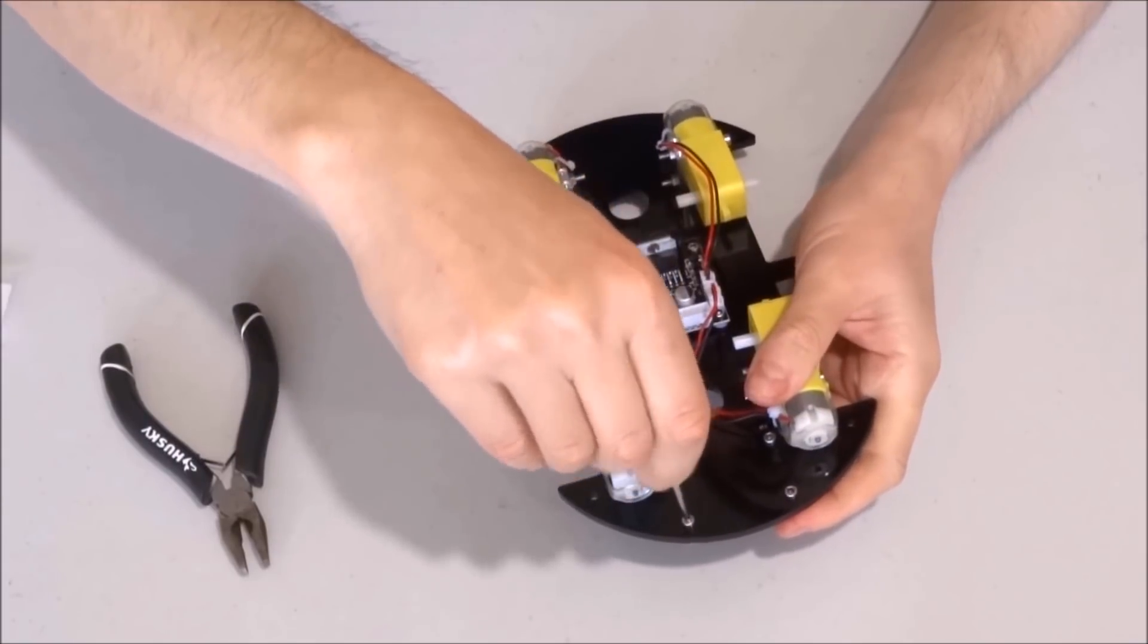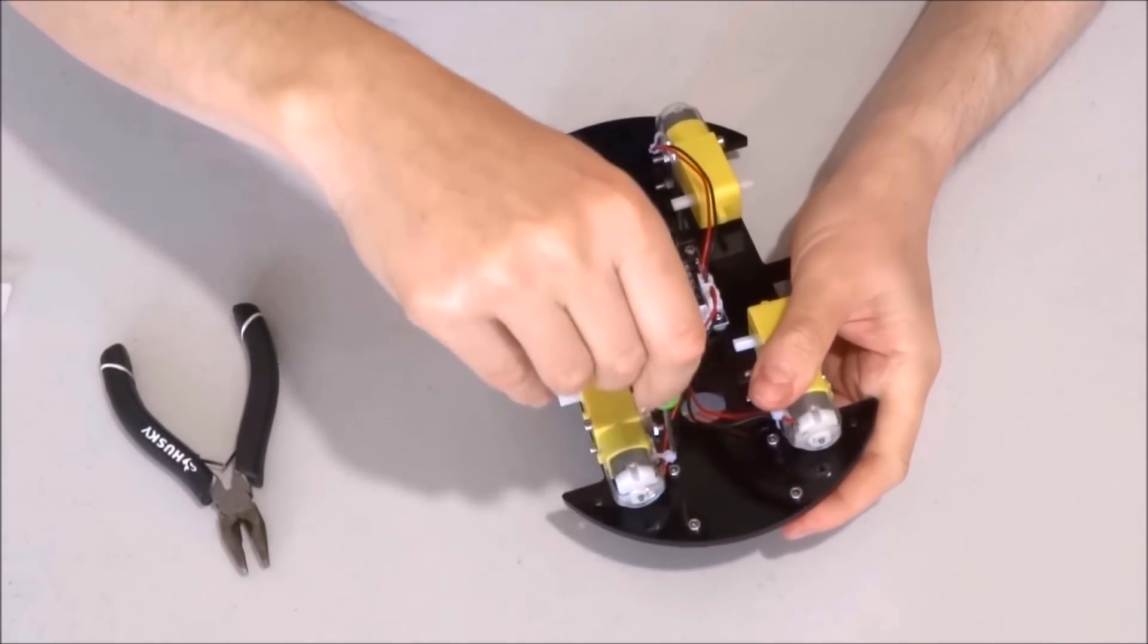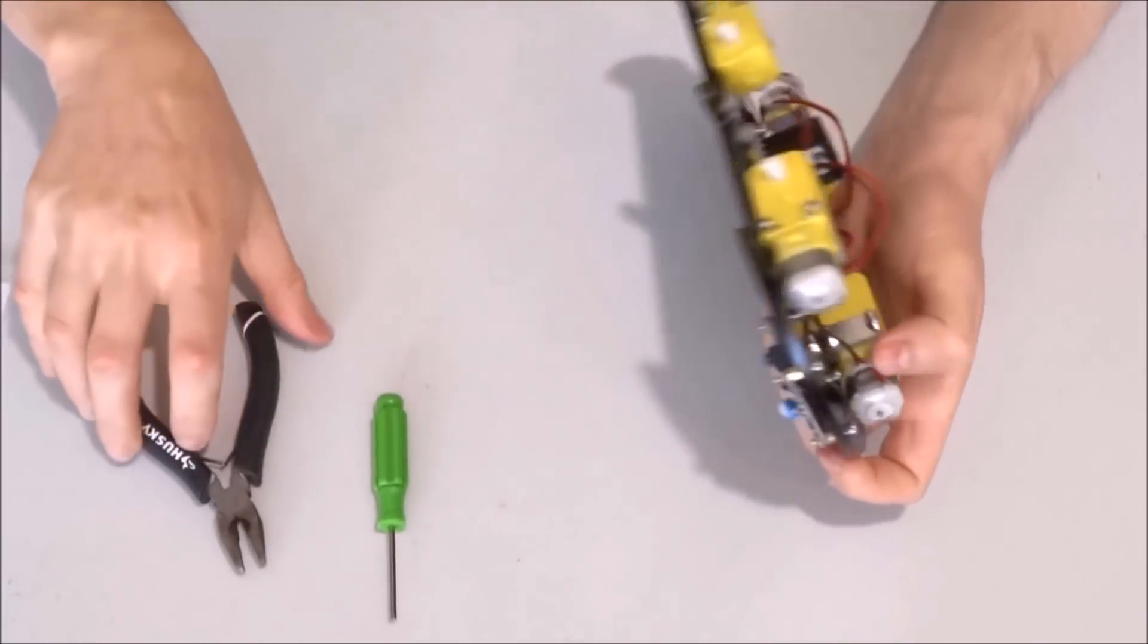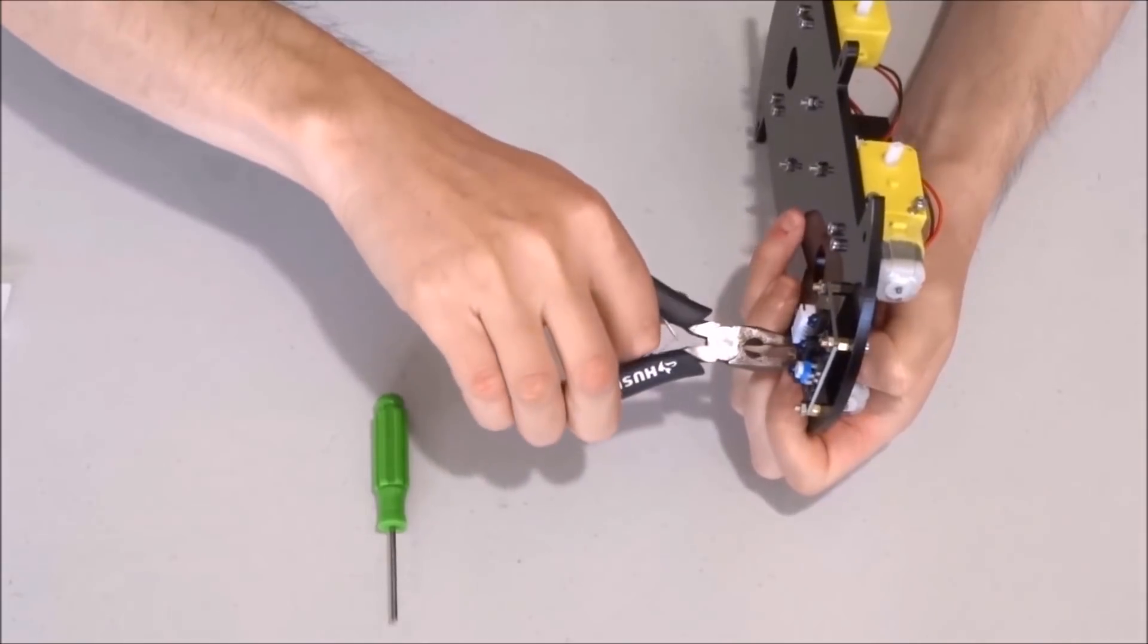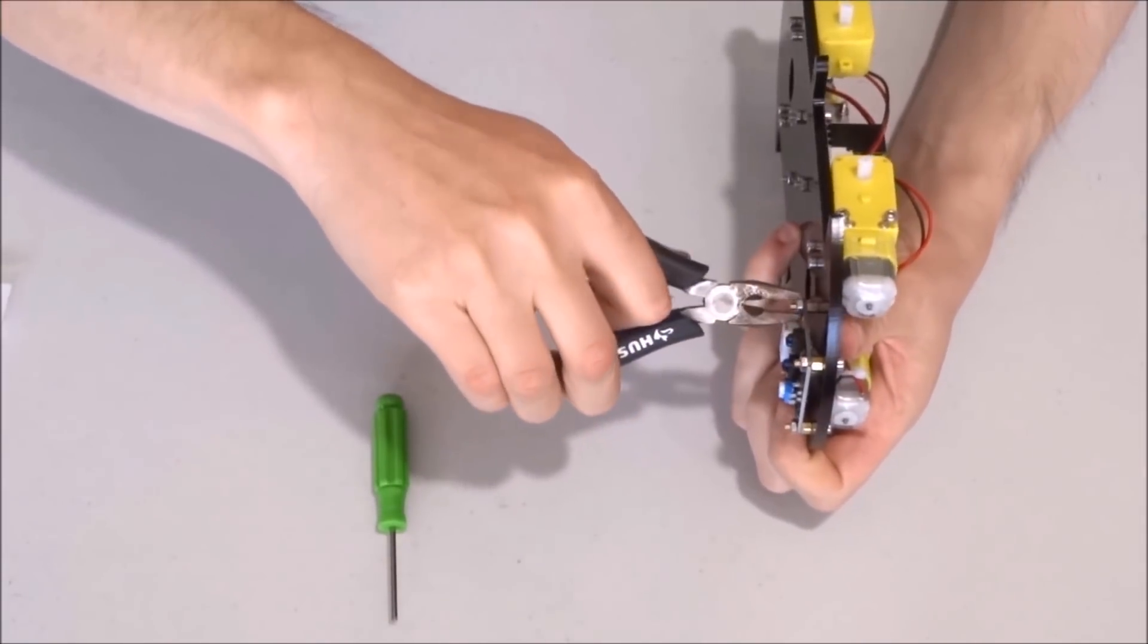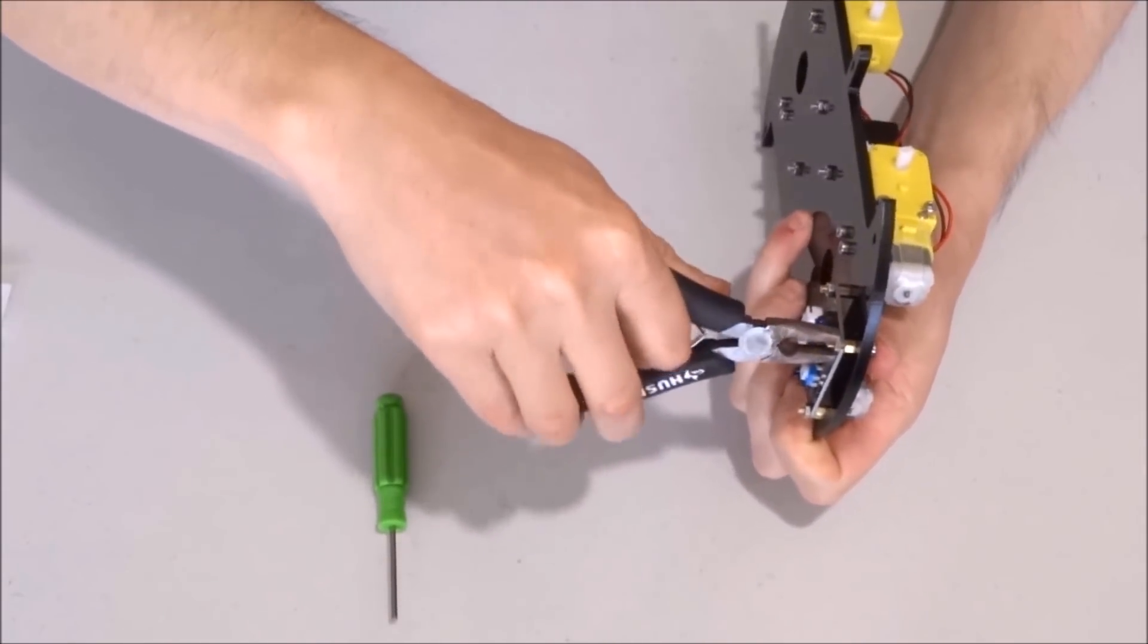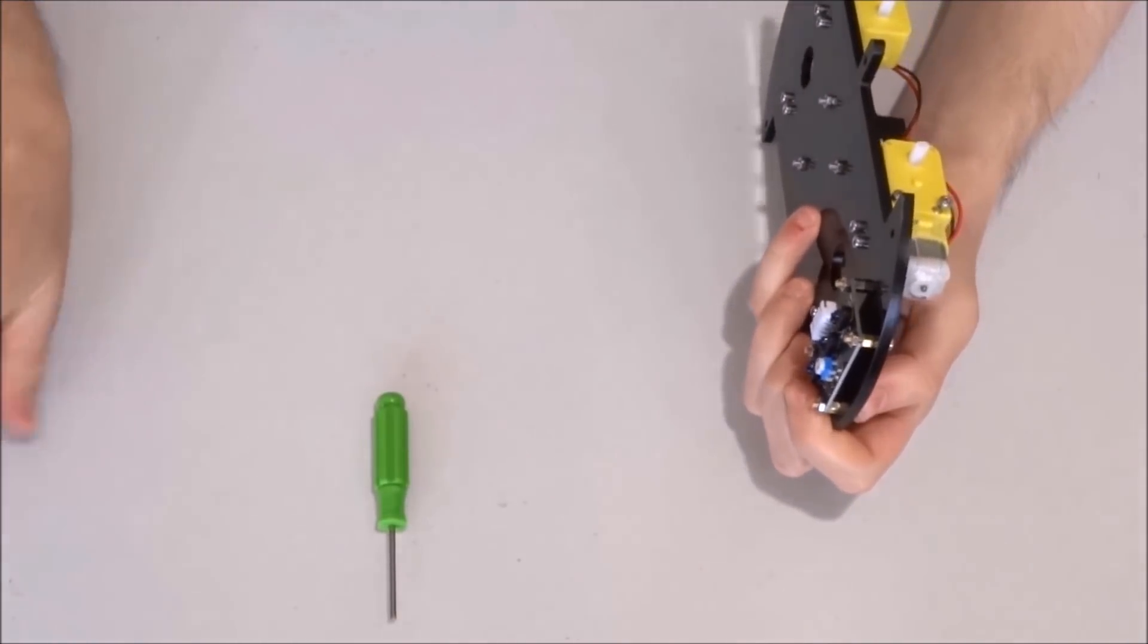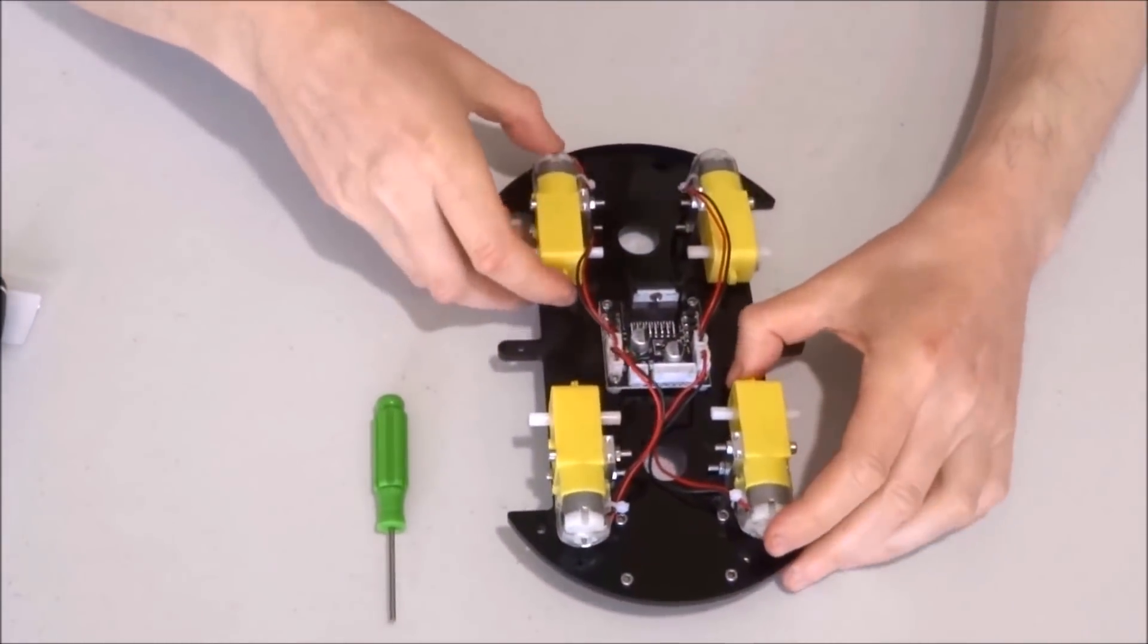The line tracking sensor is fully assembled and mounted in place. Now we can use the pliers to tighten the nuts.